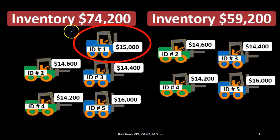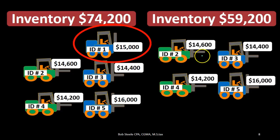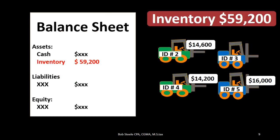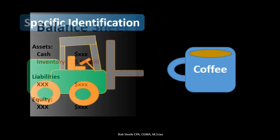The $74,200 is now backed up by our subsidiary ledger using specific identification — the remaining IDs add up: $14,600, $14,400, $14,200, and $16,000, giving us $59,200 in inventory after that sale. That $59,200 is what will now be reported on the balance sheet.